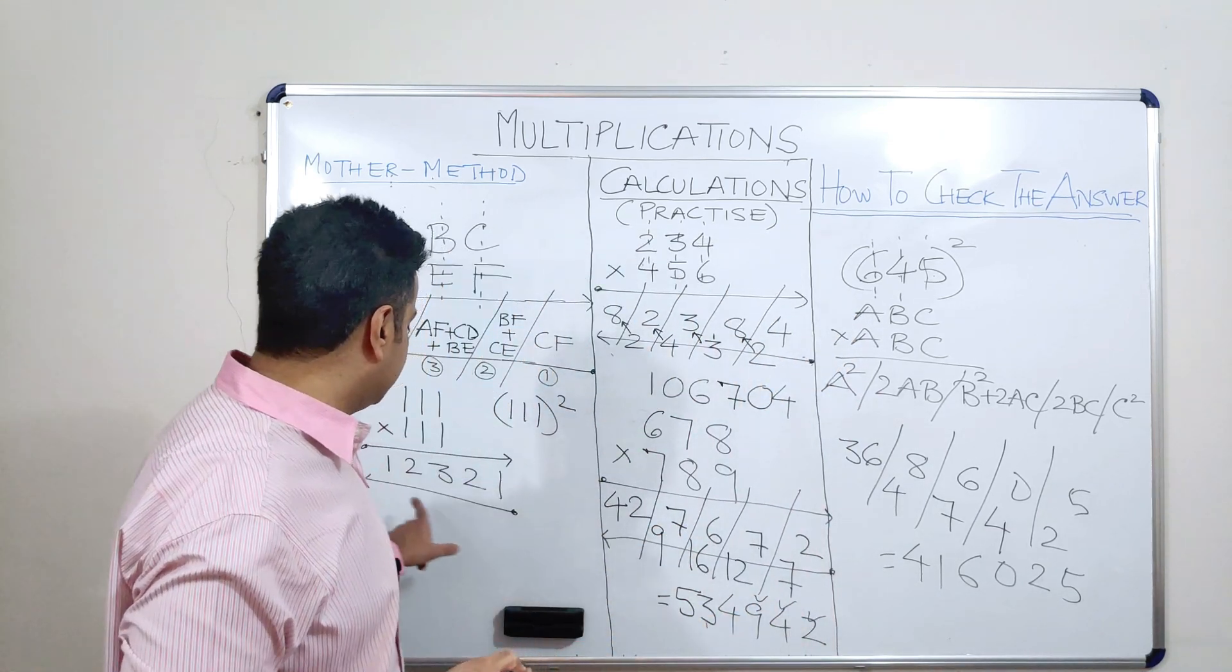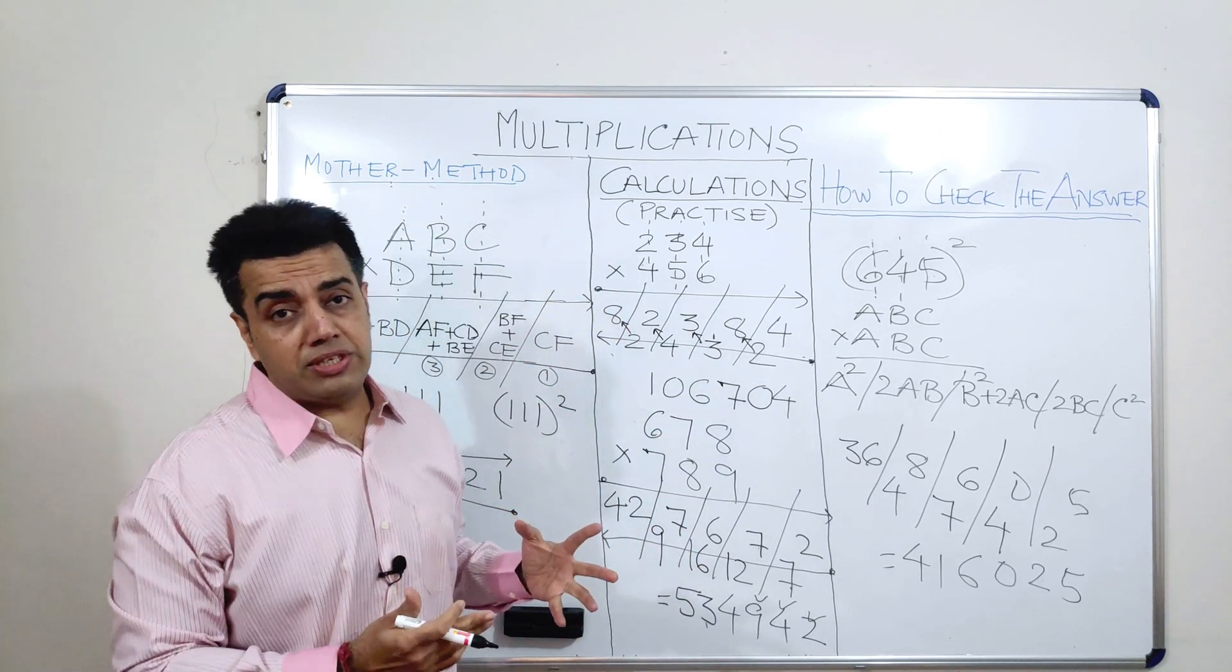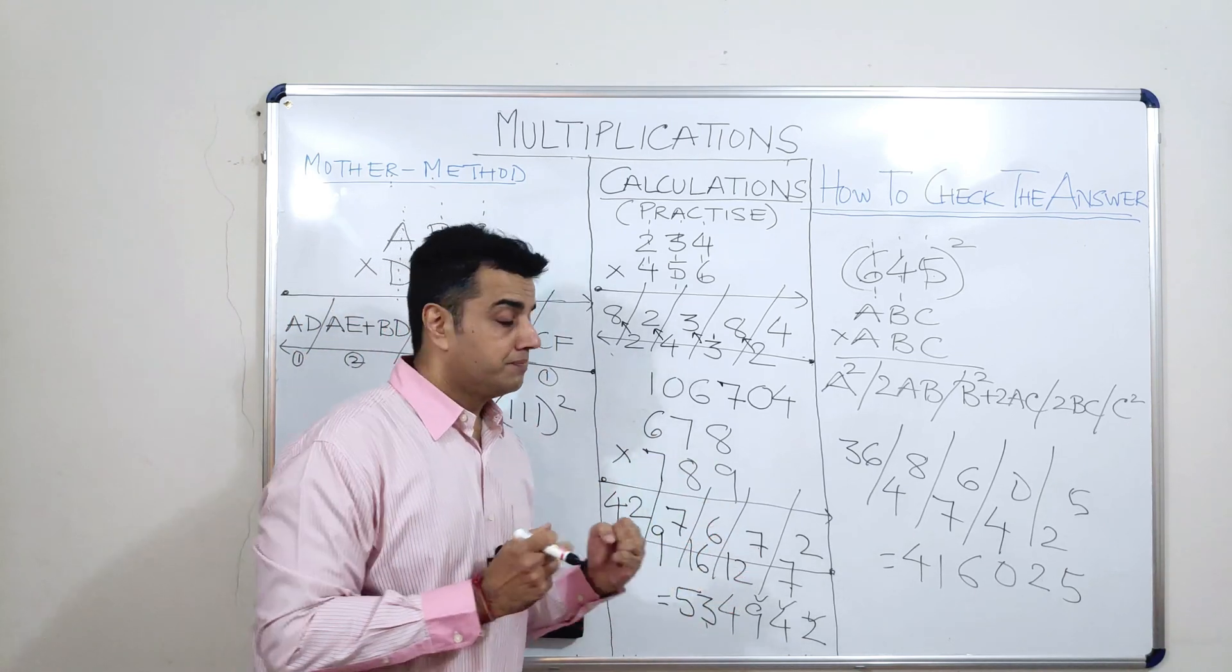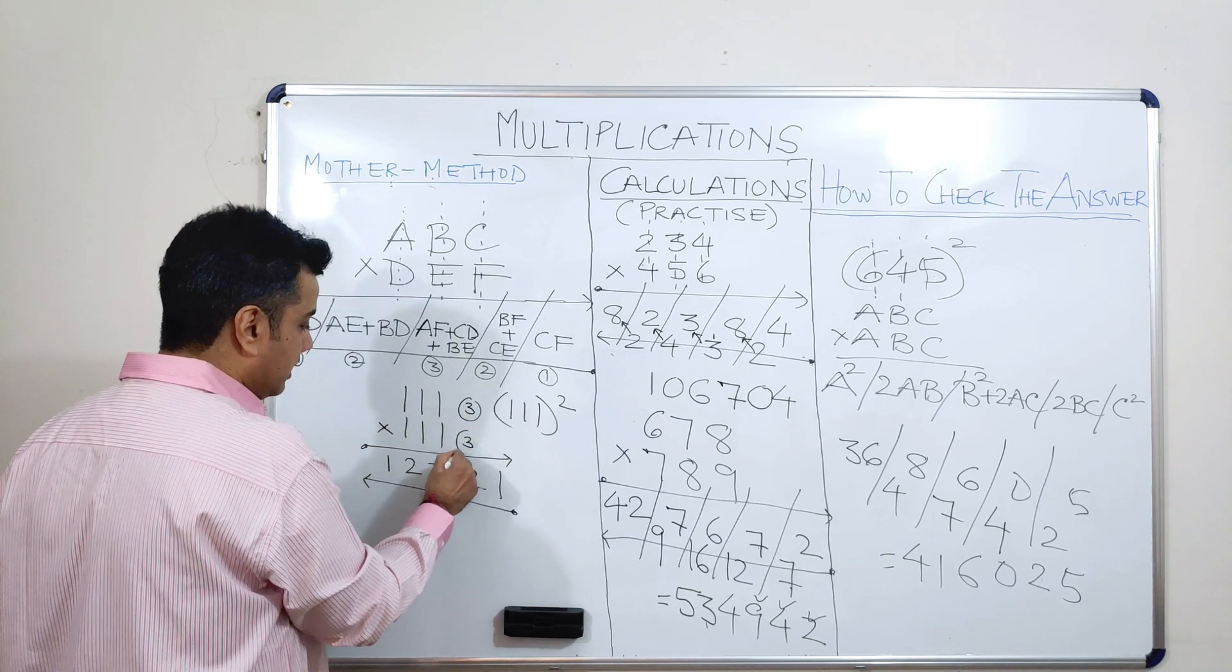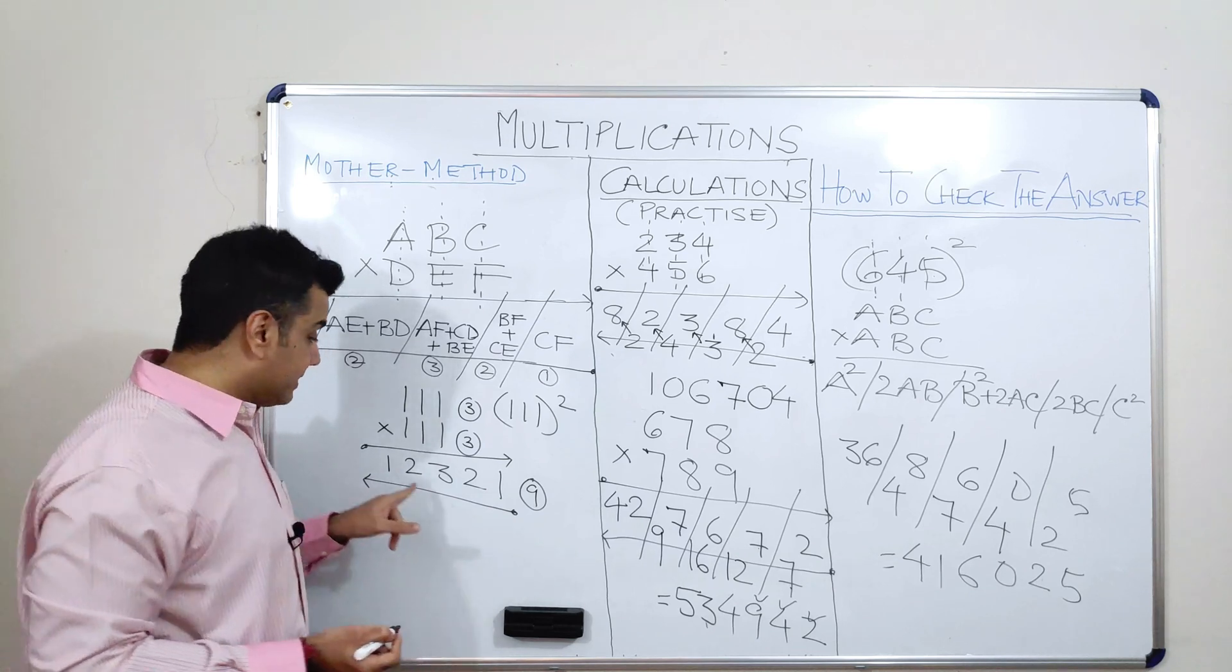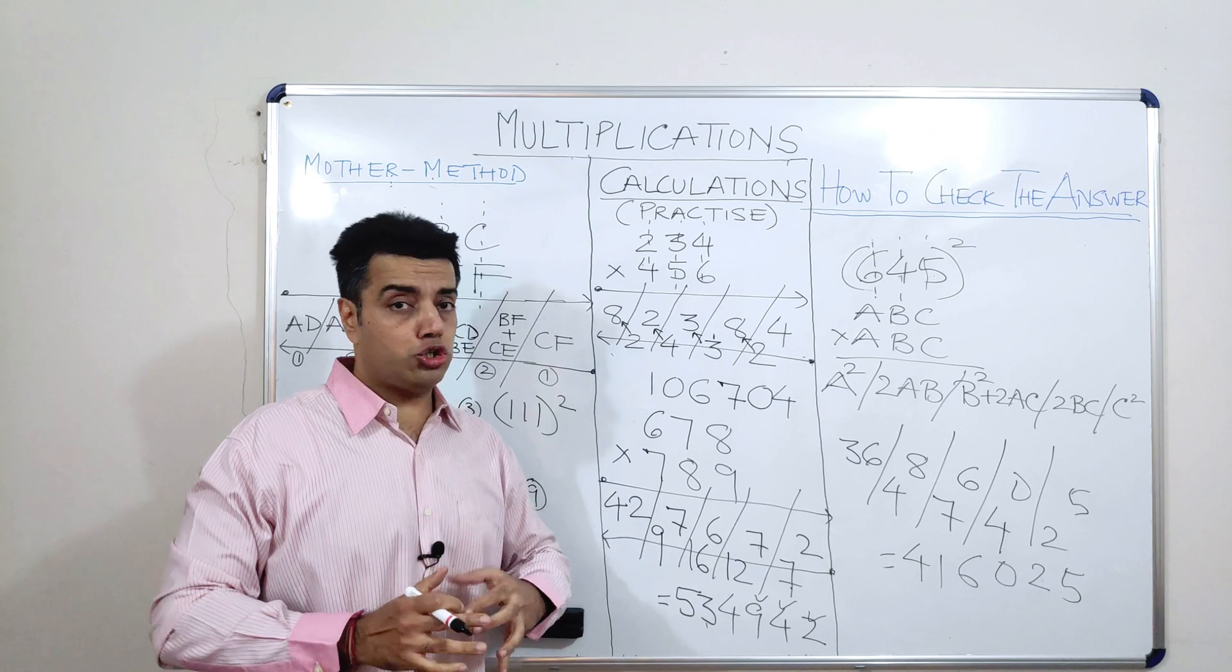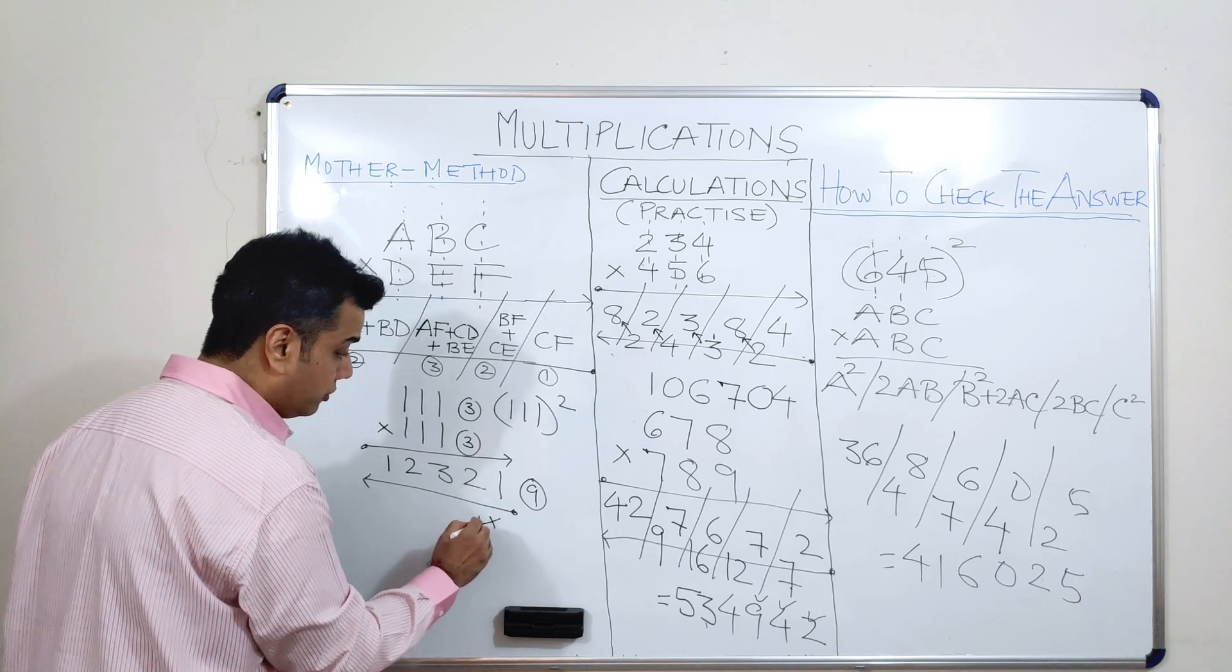Now, time to check whether all these examples that I had taken, whether the answers are correct or not. For that, I have already discussed a method earlier which is by the name of Digital Roots which I had discussed in my video wherein I had talked about how to multiply a 2 digit with another 2 digit. So, here the digital root is 3. Here the digital root is 3. 3 into 3 should give me a digital root as 9. So, if in the answer, the digital root is just like saying sum of all the digits in the answer. If it doesn't give me 9, that means the answer is definitely incorrect. If it gives me 9, that means the answer should be correct. So, 3 plus 3, 6 plus 2, 8 plus 1. The answer should be correct.